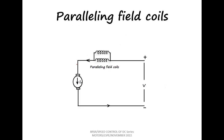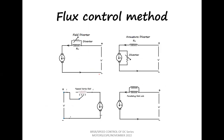The fourth method is paralleling of field coils, where the coils are connected in parallel so that the overall current through the field coils is reduced, and the speed can be increased. Overall, in the flux control method, all four methods — field diverter, armature diverter, tapped field control, and paralleling of field coils — aim at reducing the current through the field, thereby reducing the flux and increasing the speed.